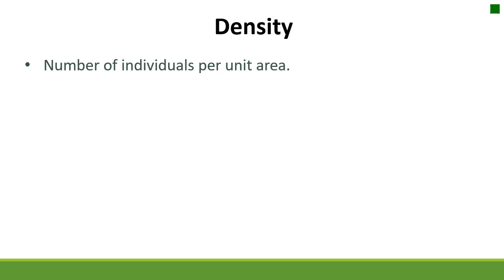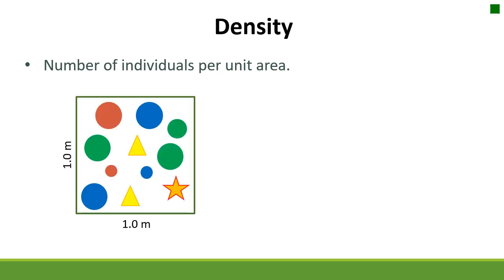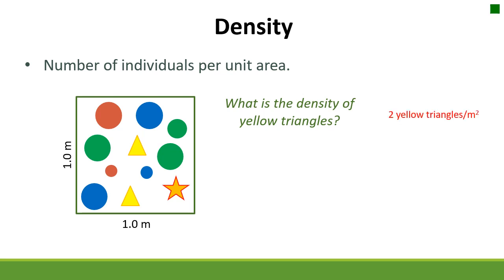Another method is density, which is the number of individuals per unit area. We often say plants per meter squared, plants per hectare, or plants per acre — all of those have a unit area and a number of individuals. Looking at this fake plant community I drew, we have a quadrant that's one meter by one meter with a lot of different plant species. If I ask what is the density of yellow triangles — there are two yellow triangles per meter squared. For circles, there are eight circles per meter squared.